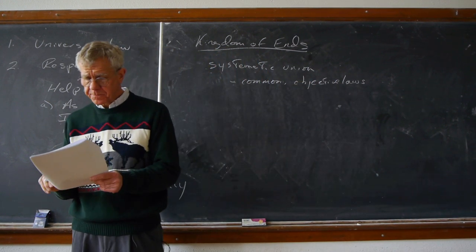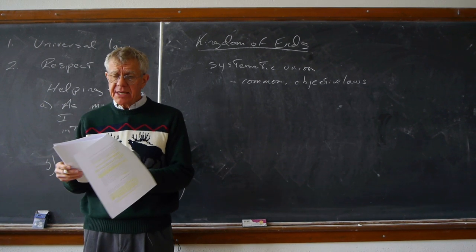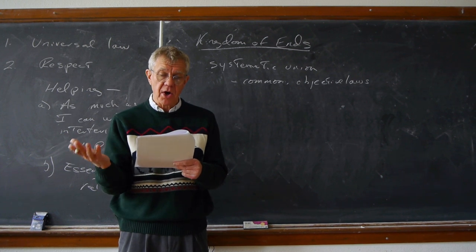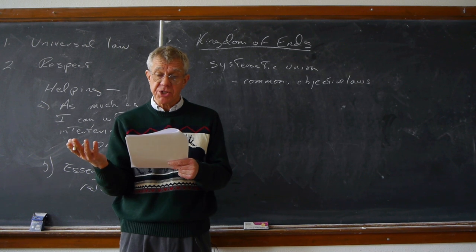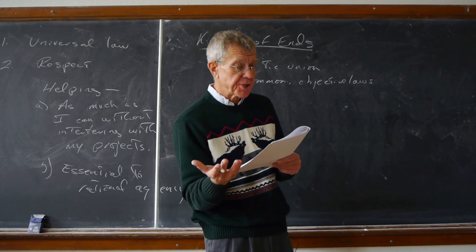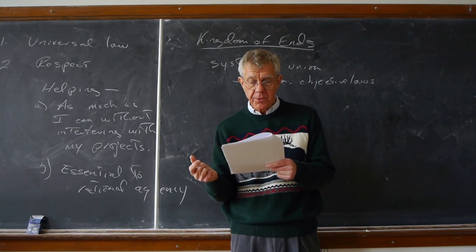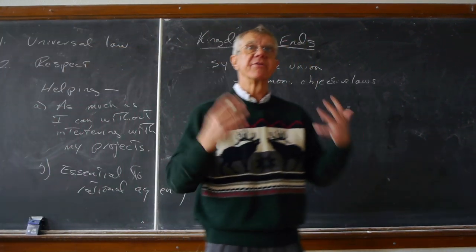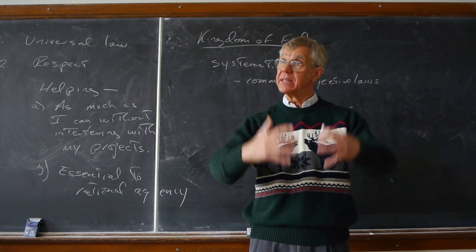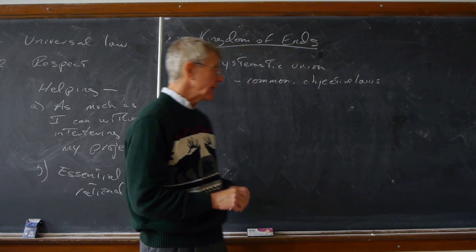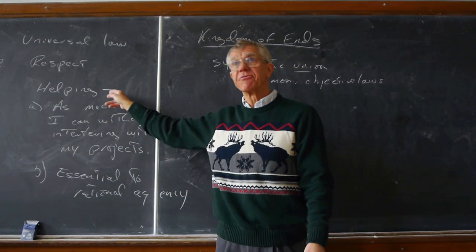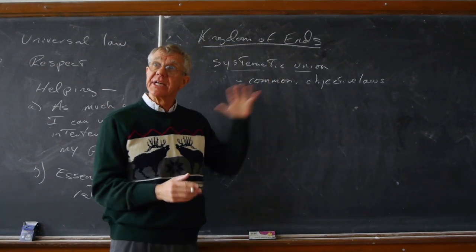He says, by a kingdom I understand the union of different rational beings in a system by common laws. If we abstract from the personal differences of rational beings, and likewise from all the content of their private ends, we shall be able to conceive all ends combined into a systematic whole, including both rational beings as ends in themselves and also the special ends which each may propose to himself. That is to say, we can conceive of a kingdom of ends, which on the preceding principles is possible. What is this? It is a systematic union of rational beings by common objective laws. Now, this is a kingdom of ends where we've got a systematic union of rational beings by common objective laws. Now, what does he mean by this? What exactly does this require?